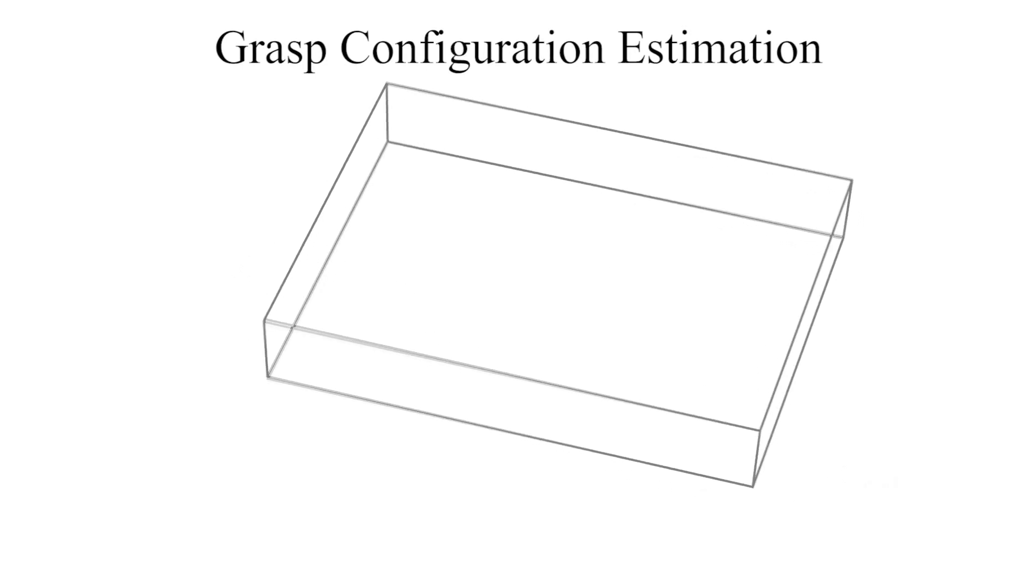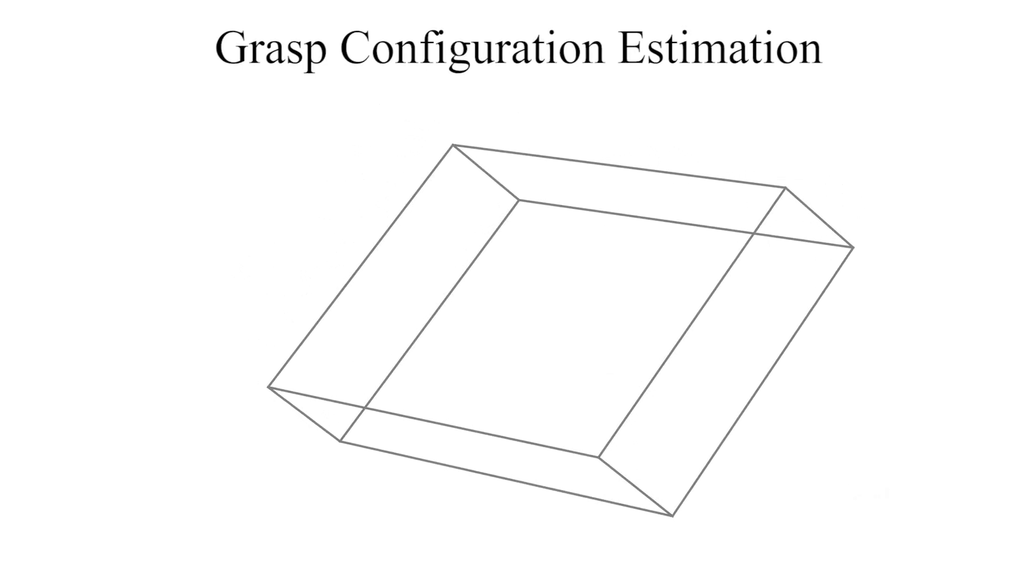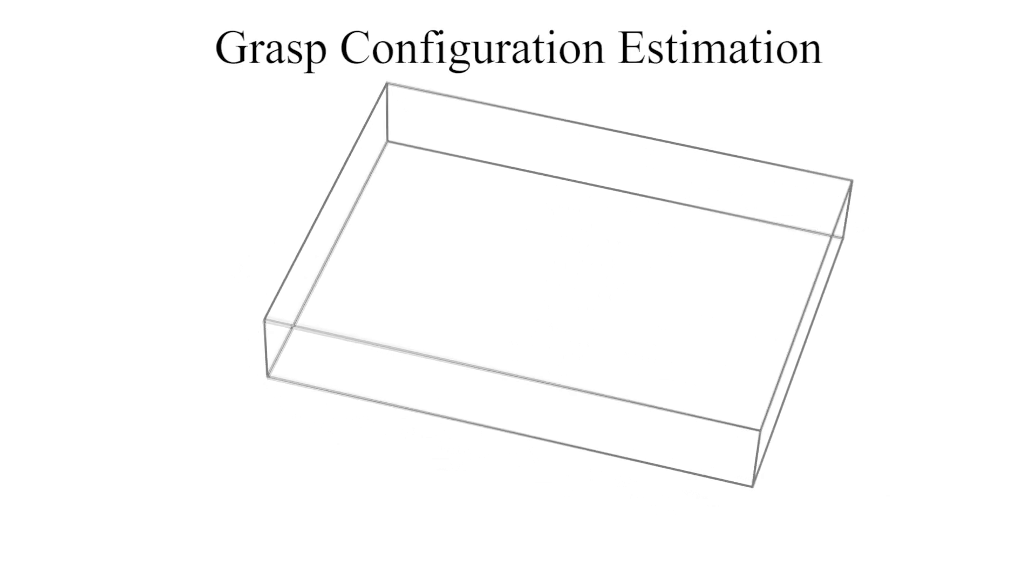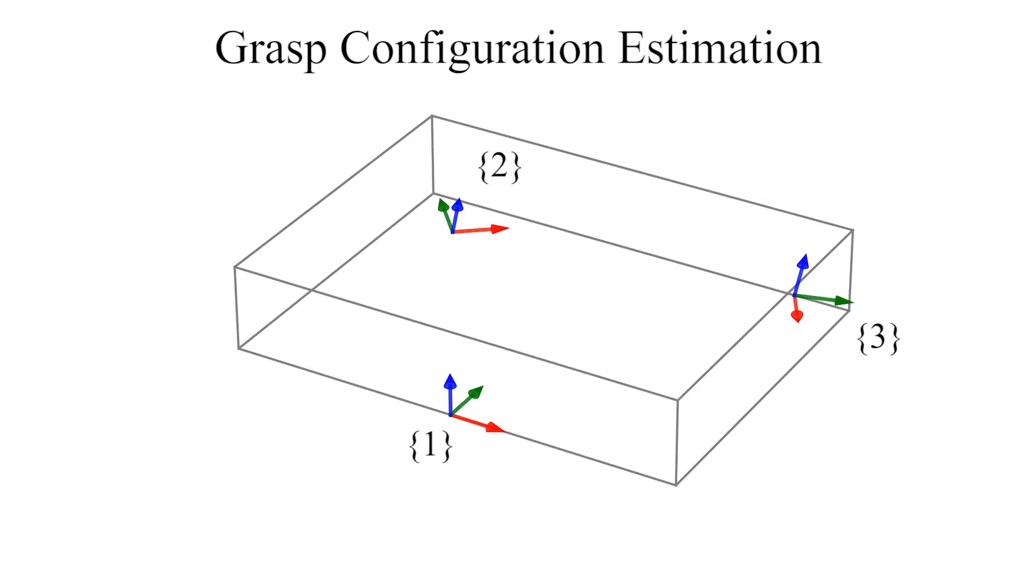First, the team moves the payload randomly, and twists at the robot contacts are used to estimate the configurations of the robot grasp frames relative to each other.